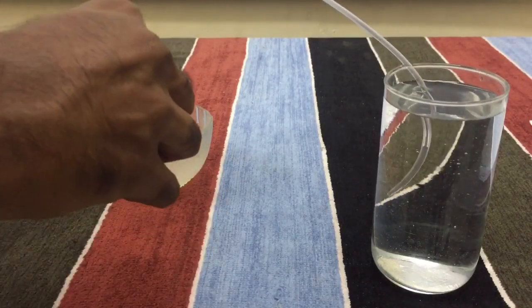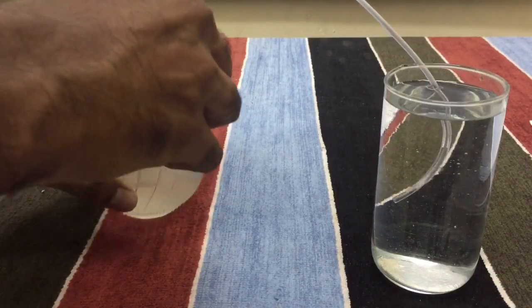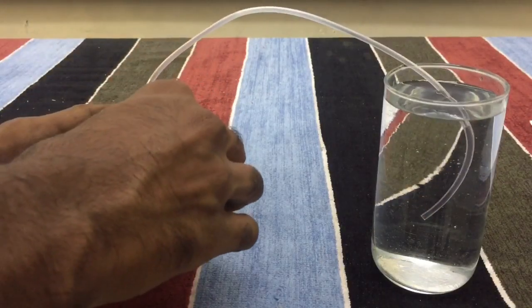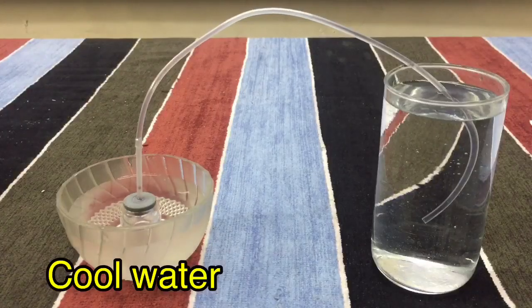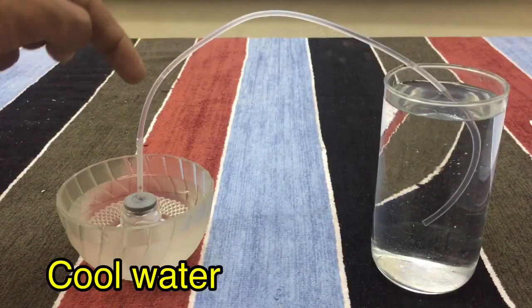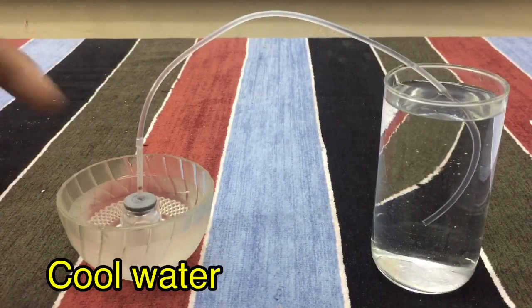Now let us place the glass bottle in the tumbler of cool water and let us see what happens. You can observe the flow of water from glass to the glass bottle.